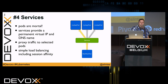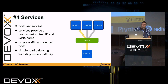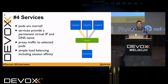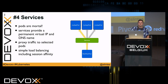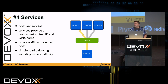Pods are mortal, but you still need to access them. Since pods can get a new IP address when restarted, we have services. Services provide a stable IP address and a DNS name for your pods. They proxy traffic to the selected pods and do load balancing if you have more than one replica.